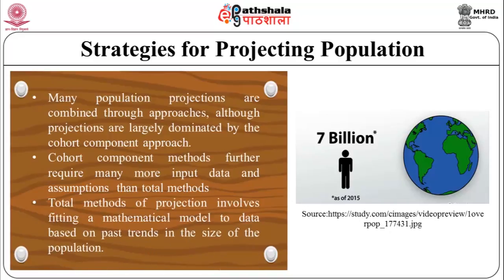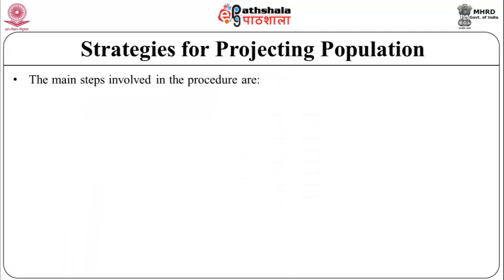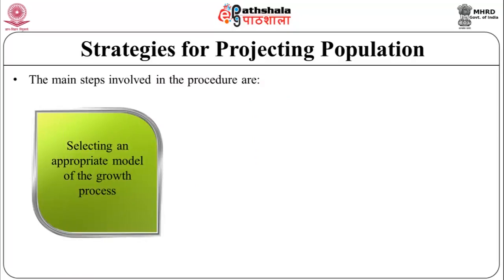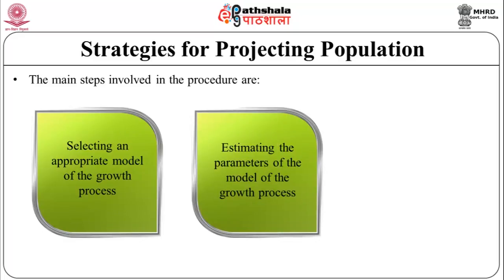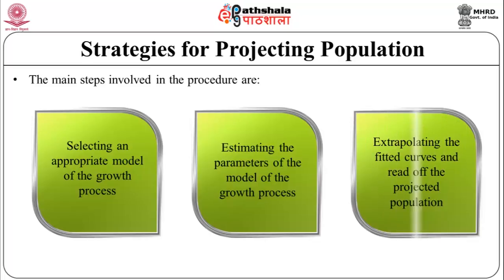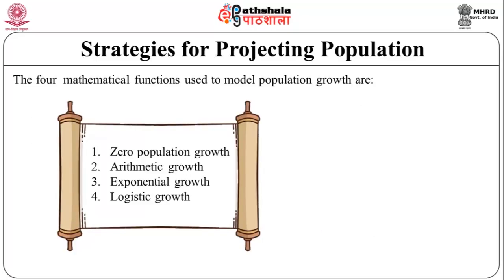Total methods of projection involve fitting a mathematical model to data based on past trends in the size of the population. The main steps are: selecting an appropriate model of the growth process; estimating the parameters of the model; and extrapolating the fitted curves to project the population. The four mathematical functions used to model population growth are zero population growth, arithmetic growth, exponential growth, and logistic growth.